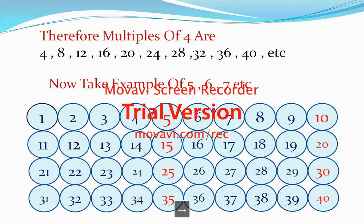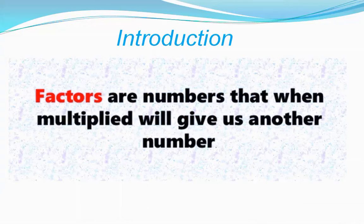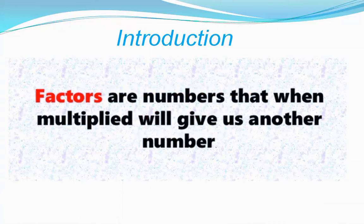Now what are factors? Factors are numbers that when multiplied will give us another number. When you multiply two numbers to get a resulting number, those multiplied numbers are called factors.